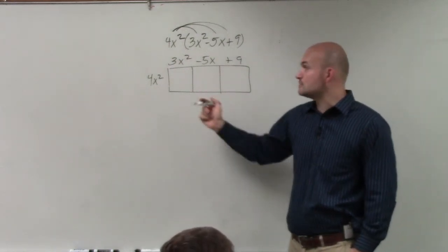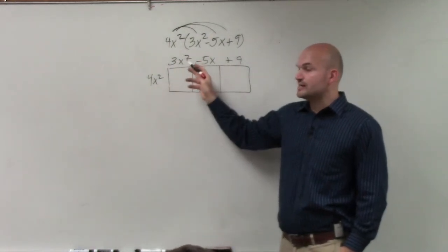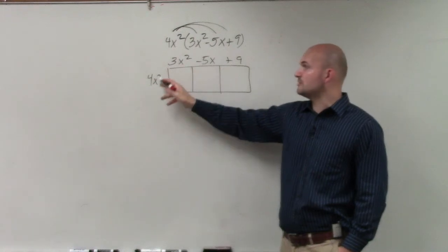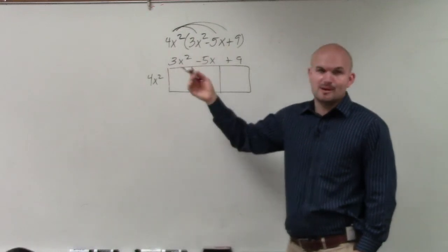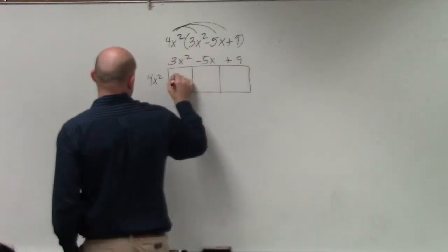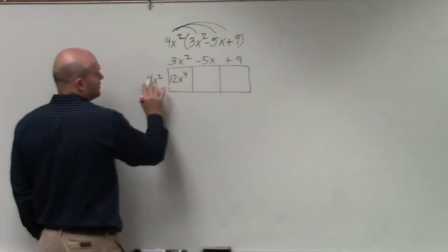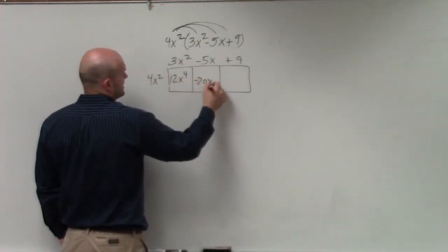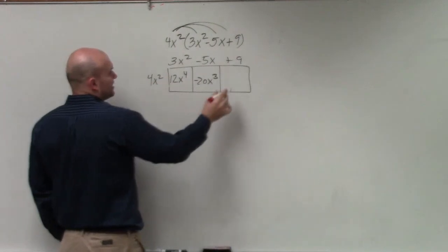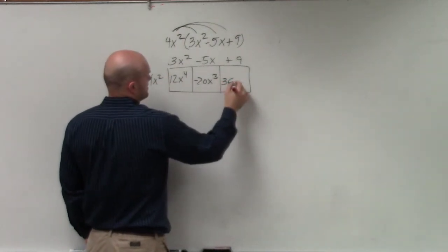Remember, area is length times width. So 4x² times 3x². We multiply the 4 and the 3, and x² times x². Remember, you add the powers. That's 12x⁴. This becomes -20x³, and then this becomes 36x².